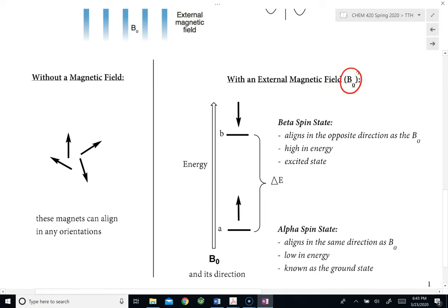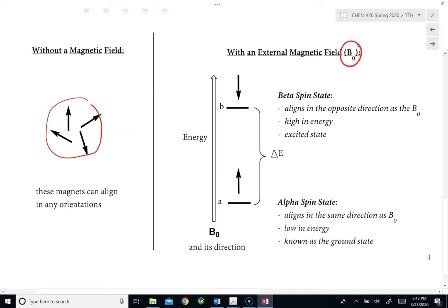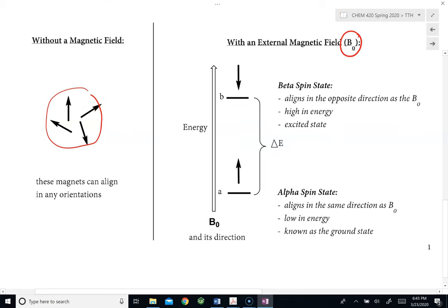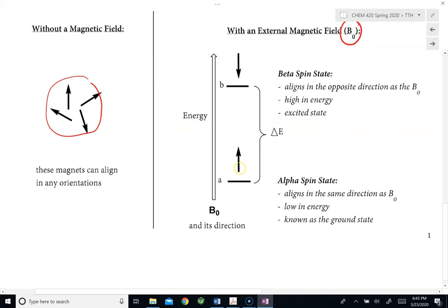B-naught is the external magnetic field. Once we take these little magnets and put them into an external magnetic field, we will see that the magnets will begin to flip. They can align in two possible directions. One is where they would point along with the direction of the external magnetic field — B-naught points up, representing the direction of the external magnetic field. So when we put the hydrogen into this external magnetic field, the hydrogen can also point in the same direction. The other possible state is in the opposite direction compared to the direction of the external magnetic field.